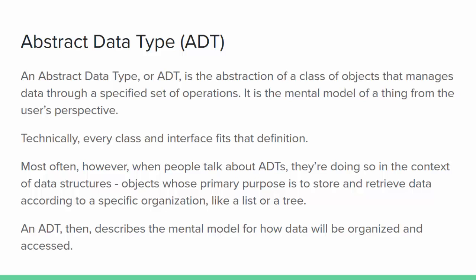However, most often when people are talking about ADTs, they're doing so in the context of data structures — objects whose primary purpose is to store and retrieve data according to a specific organization, like a list or a tree. The ADT then describes the mental model for how the data will be organized, and it defines the set of operations needed to work with data in that model. Implementation — how the object will actually carry out those operations — is not part of this description.